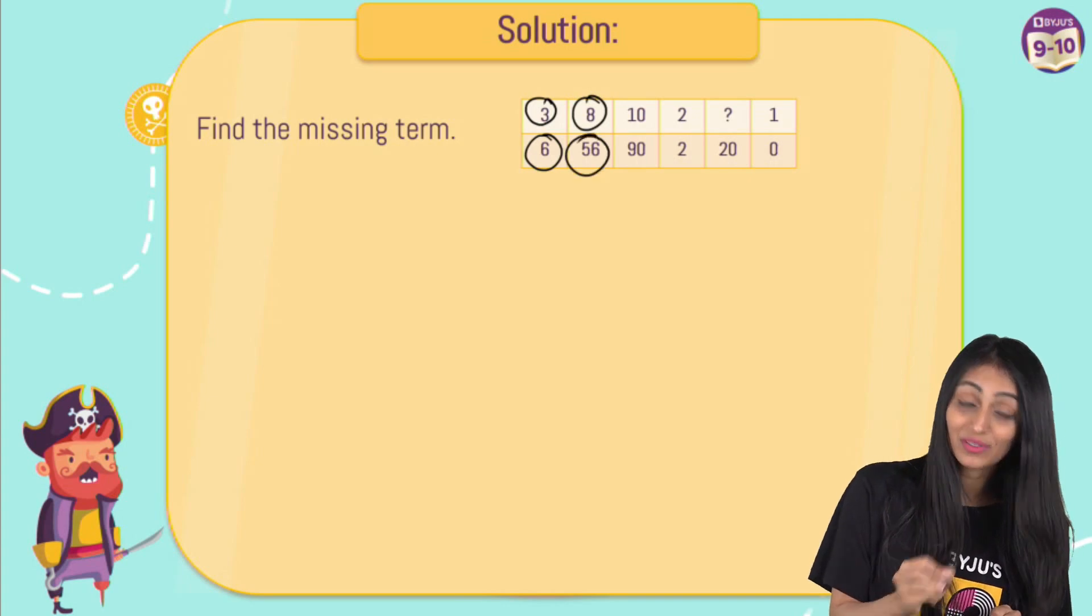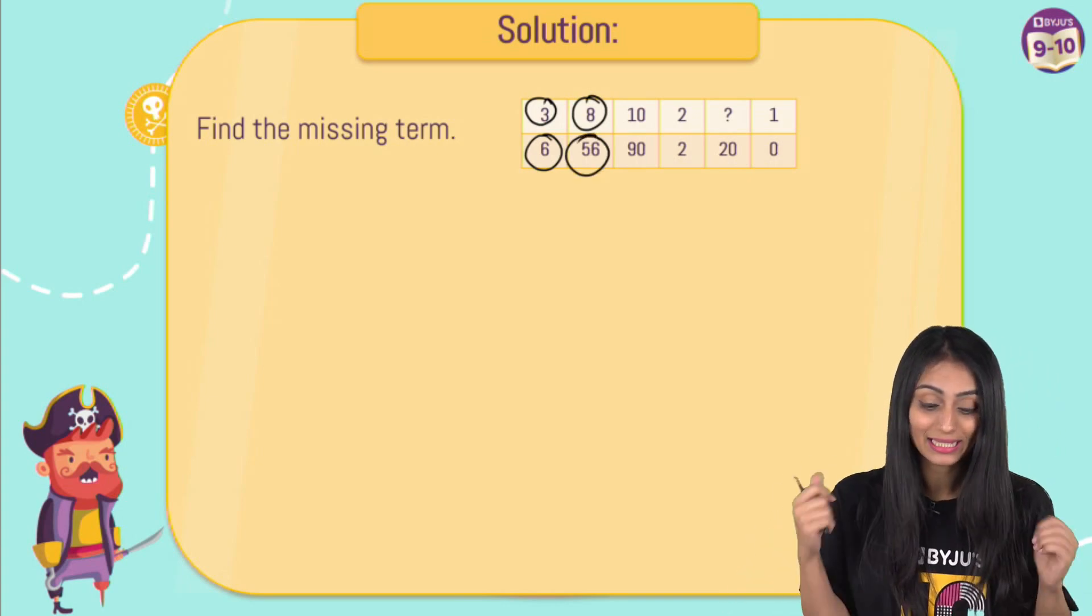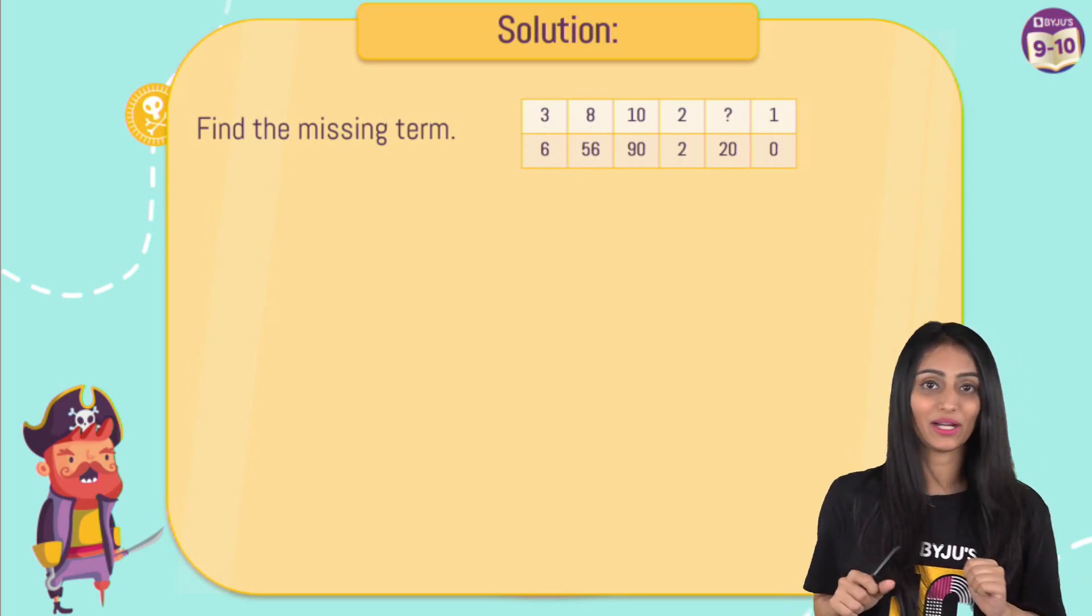Like here we have eight, but this is 56, this is not just double of it, not even the square of it. So obviously this is not the pattern here.